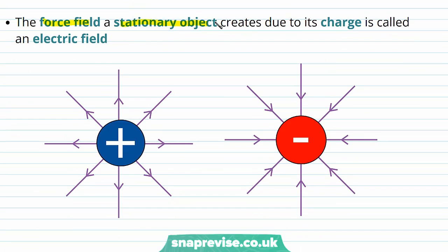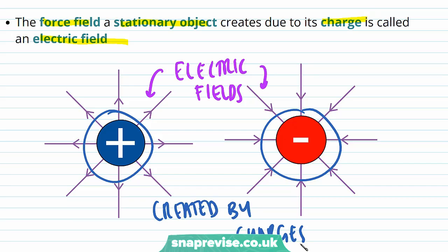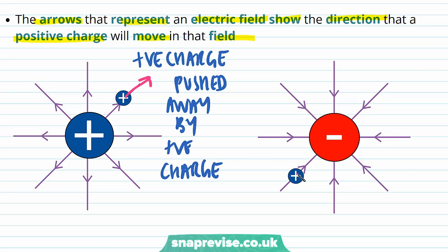The force field that a stationary object creates due to its charge is called an electric field. These electric fields are created by these charges. The arrows that represent an electric field show the direction that a positive charge will move in that field. So we can see that a positive charge is being pushed away by another positive charge — it's being repelled. By contrast, a positive charge placed within the force field of a negative charge is going to be pulled in and attracted towards the negative charge.